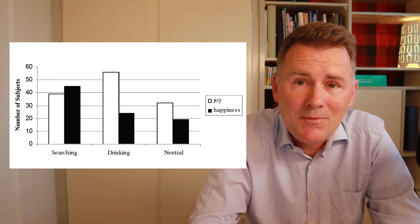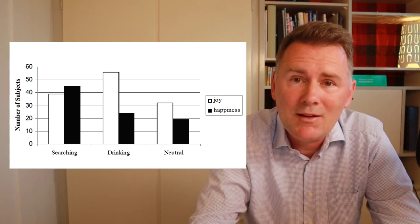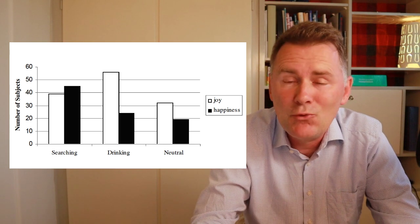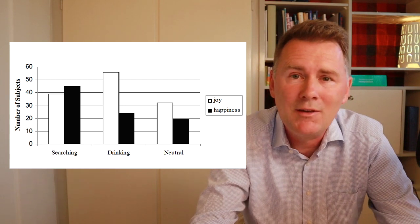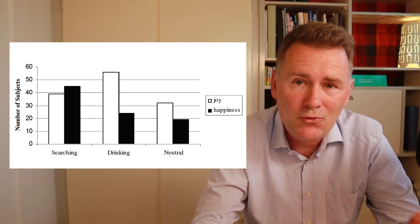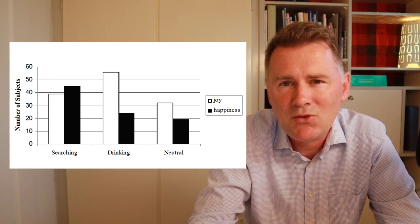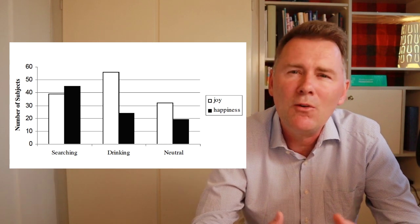Okay, what came up? The results show that the searching group were actually more likely to say happiness and the drinking group were more likely to say joy, in line with the predictions of the researchers. The control group were also more likely to say joy, but not quite as much as the drinking group. Now, what does this show?